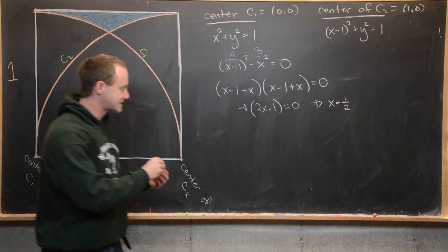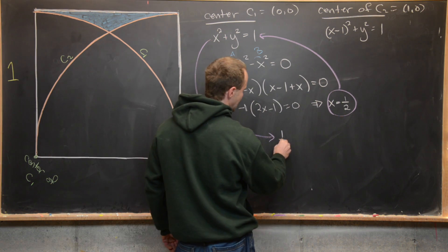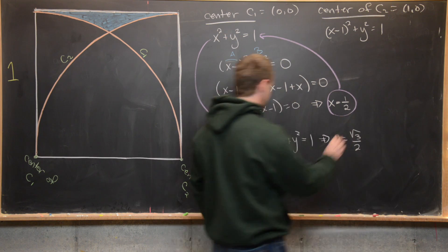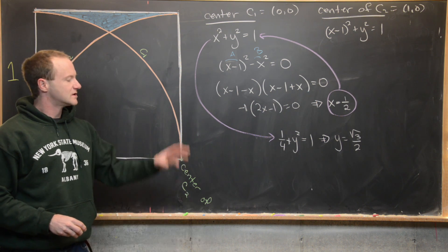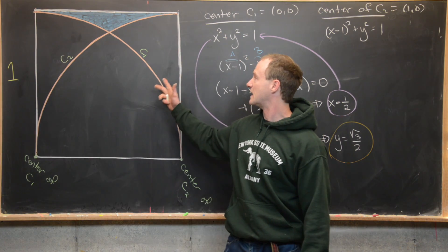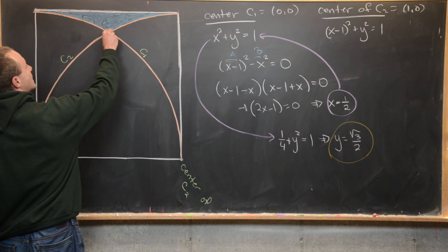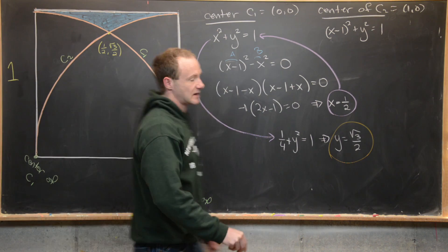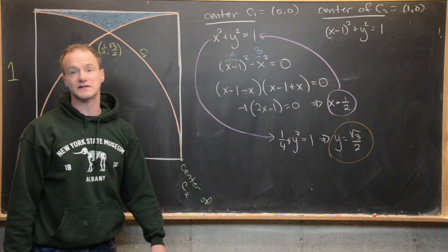Substituting x = 1/2 into the original equation gives 1/4 + y² = 1, so y² = 3/4, and taking the square root gives y = √3/2. We disregard the negative solution since everything is in the first quadrant. So the intersection point has coordinates (1/2, √3/2). Now let's set up an integral for this blue shaded area.